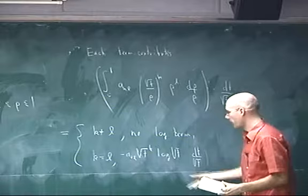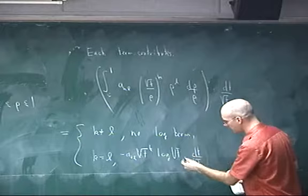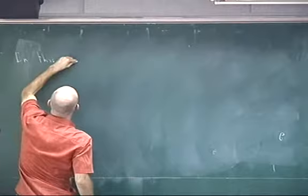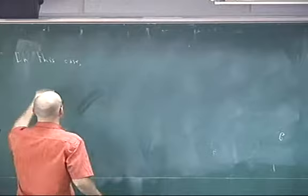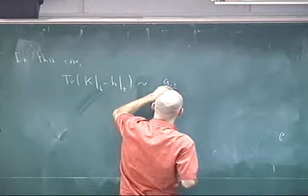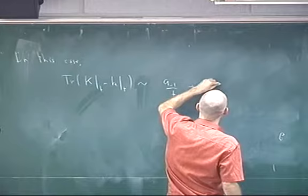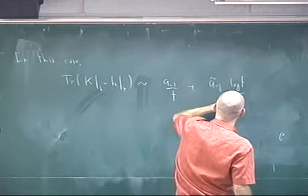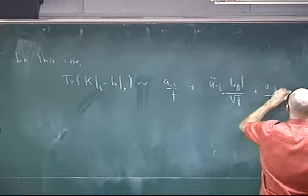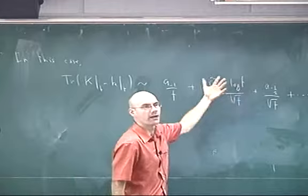With the term we added to make the operator trace class, that would be one of these terms where k equals l equals 0 — the top-order term of this correction — which gives a situation where we have log of t or square root of t over square root of t. After some computation to see the other contributions, the trace of k(t) minus little k(t) behaves like this: the most singular term would be 1 over t, then there's this log term over square root of t, and there could be some square root of t terms. So you have logarithmic terms arising in the asymptotic expansion.